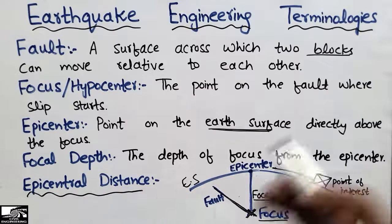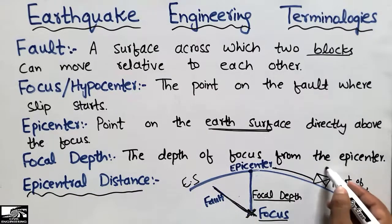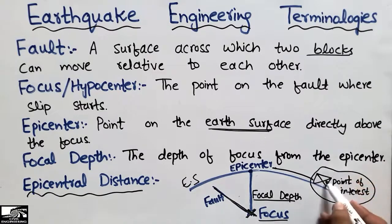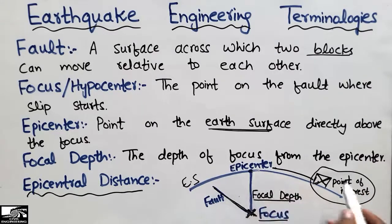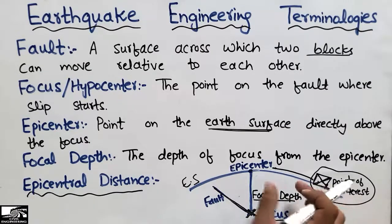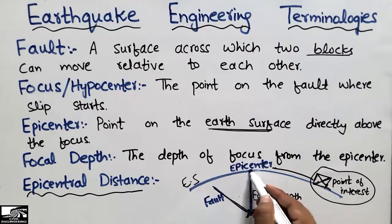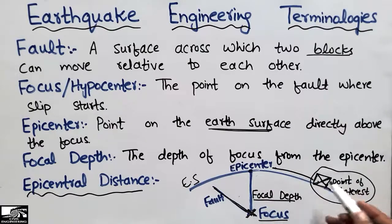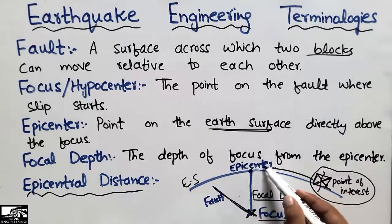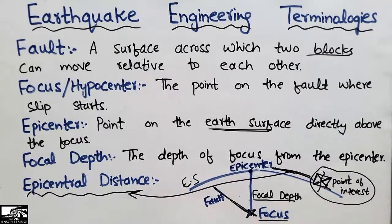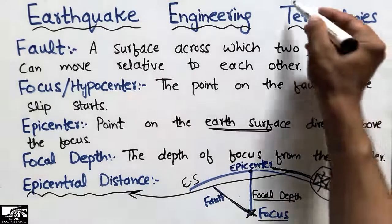Now, what is epicentral distance? Let's suppose there is some earthquake and we have a building at some location. The distance from the epicenter to our point of interest — where we want to find the magnitude of the earthquake or the seismic waves — is known as the epicentral distance.